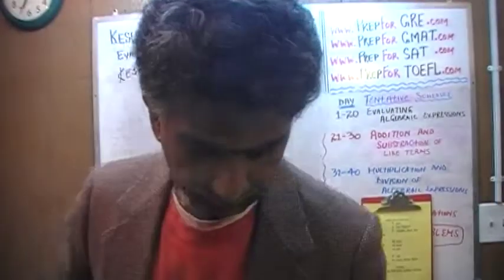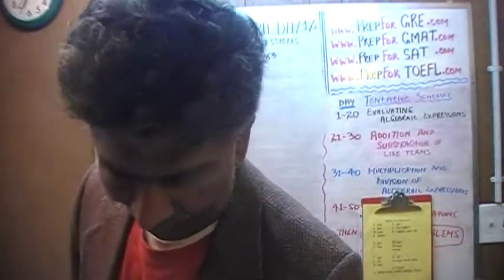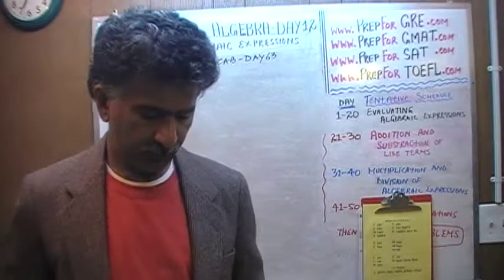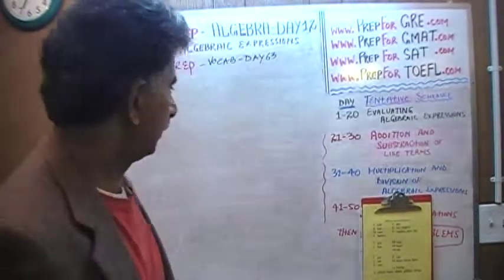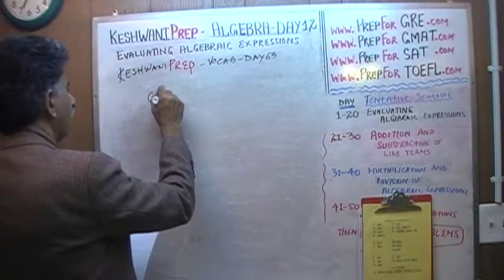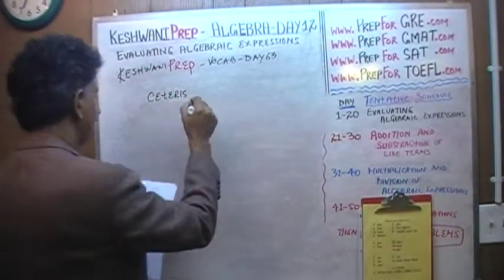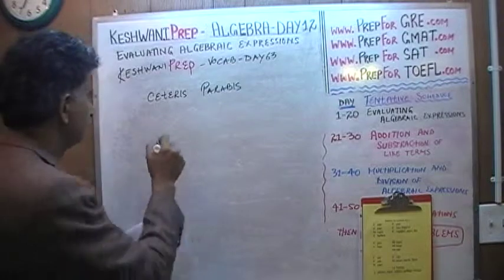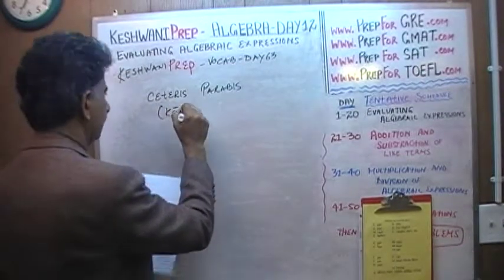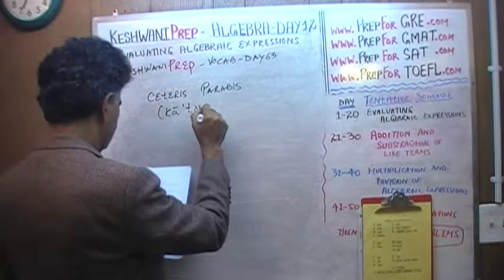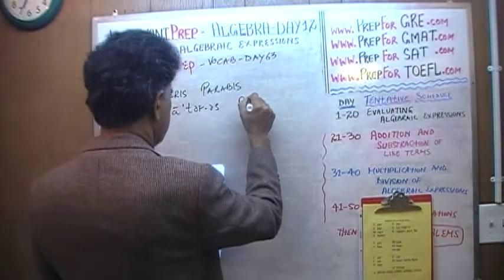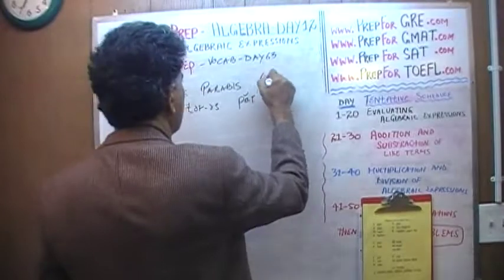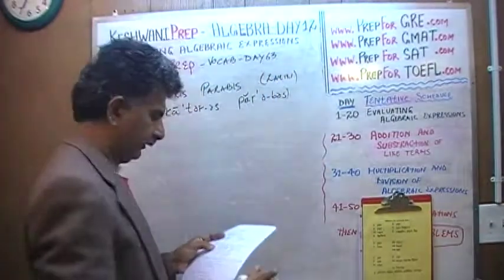The next word we're going to learn is actually not a word — it's a phrase from Latin that you see a lot in textbooks, in science textbooks, in mathematical textbooks, and so forth. The phrase is 'ceteris paribus.' As I said, it's a Latin phrase. It's an adverb.